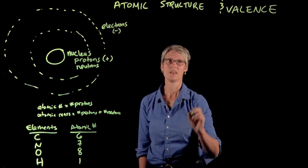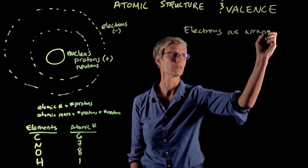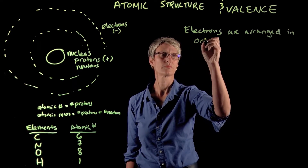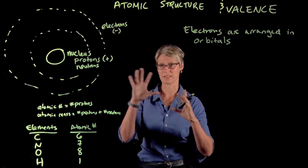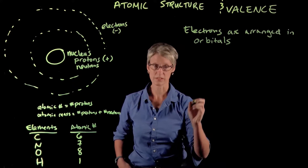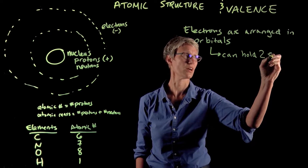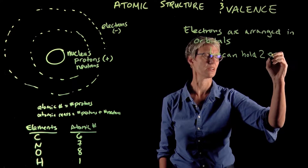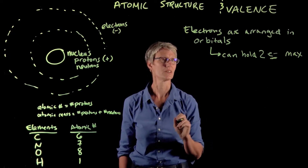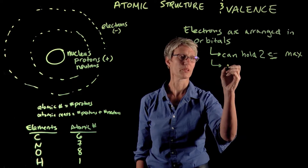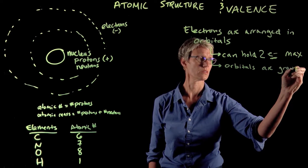Now I want to turn our attention to electrons. Electrons are arranged in orbitals. An orbital describes the pattern of movement that an electron takes as it orbits around the nucleus. Each orbital can hold a maximum of two electrons.